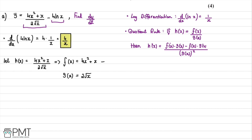Differentiating f(x) = 4x² + x: we multiply by the power and reduce the power by 1, giving 8x + 1. For g(x) = 2√x = 2x^(1/2): differentiating gives 2 × (1/2) × x^(−1/2) = x^(−1/2), which equals 1/√x.